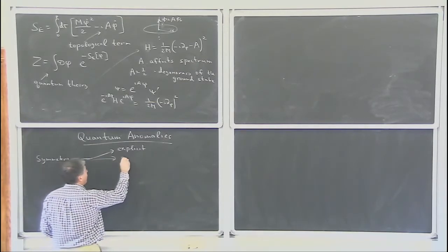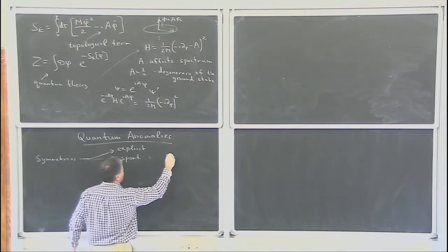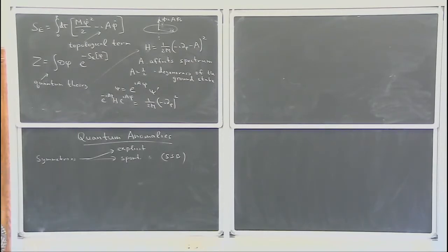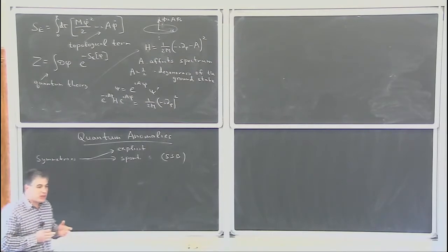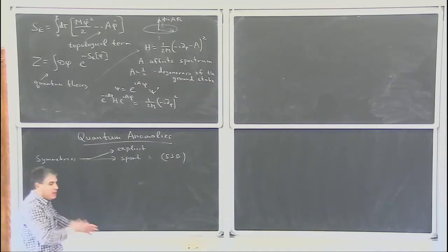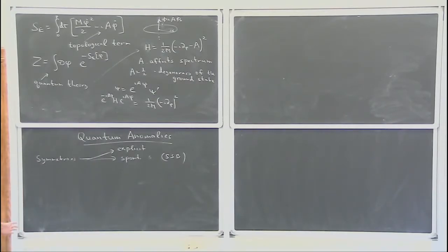Another way, which you know very well, is spontaneous symmetry breaking (SSB). This is when the Hamiltonian is symmetric with respect to some set of transformations, but the ground state is not. The symmetry is violated by the ground state, yet there are still consequences: degenerate ground states, Goldstone modes, and so on.